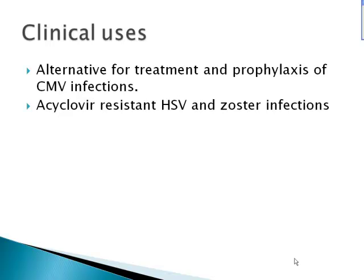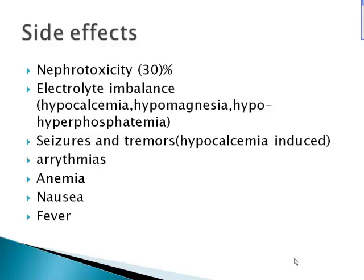Foscarnet is used as an alternative treatment. Its side effects include nephrotoxicity in about 30% of patients and electrolyte imbalances such as hypercalcemia, hypermagnesemia, and hypo- or hyperphosphatemia. Hypocalcemia can lead to seizures, tremors, and arrhythmias. Patients may also experience anemia, nausea, and fever. It is generally reserved for cases where ganciclovir or Cidofovir are ineffective.